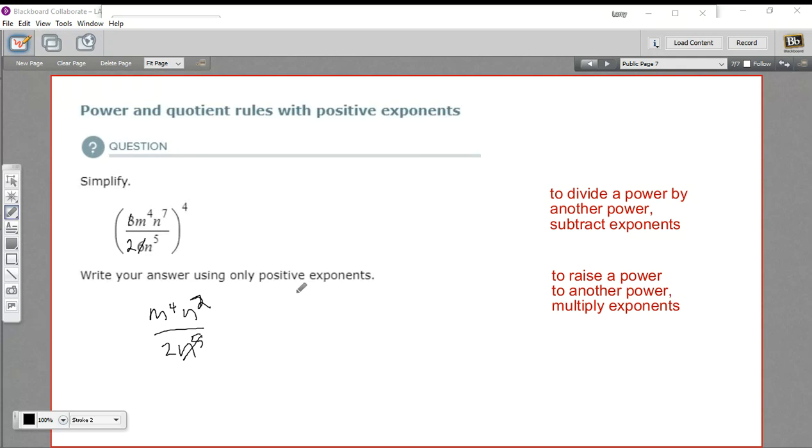If that step is confusing, think about n multiplied by itself seven times on the top and on the bottom, n multiplied by itself five times. That much is going to cancel, just leaving two n's on top. So n squared on top, and it disappears from the bottom. So I can rewrite this fraction now as m to the fourth n squared over two, and this is all raised to the fourth power.